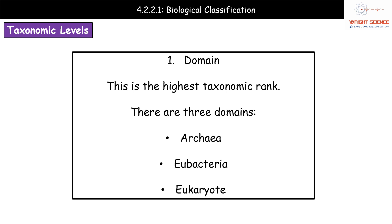The first domain is the archaea — the best way to describe them is as extreme bacteria. Think about those that live in deep sea thermal vents. We then have eubacteria, which are modern bacteria as we know them today. And then the eukaryotes are obviously eukaryotic organisms. The domain is the highest taxonomic rank, so within each of these three domains there is still quite a diverse range of organisms.